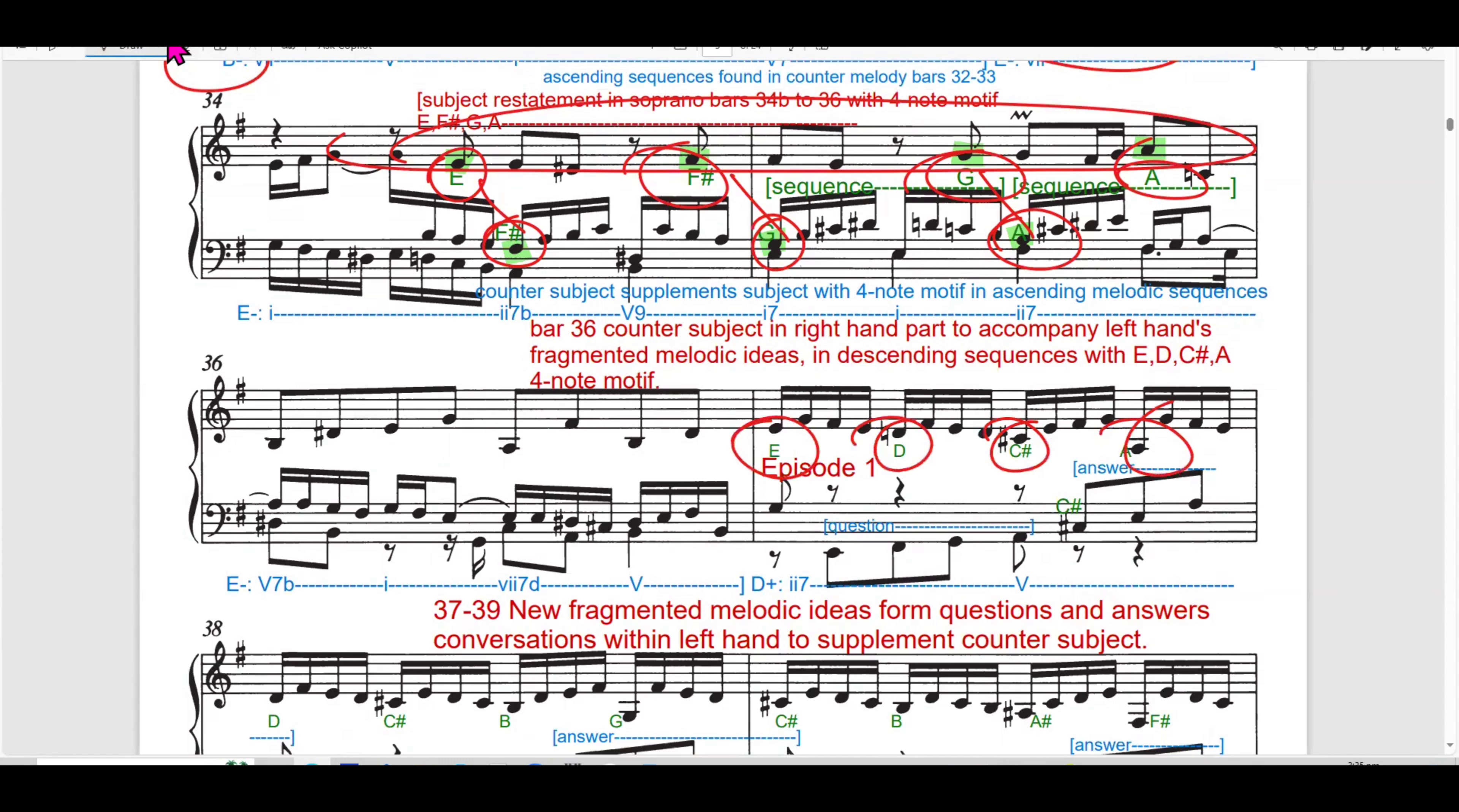The counter subject undergoes a sequence in this bar. So in bar 30, there are some sequences. These are the sequences that develop from here. So this is the first appearance of the melody, followed by the sequences that I highlight in green. It reinforces the contrapuntal texture and helps drive the harmonic progression.